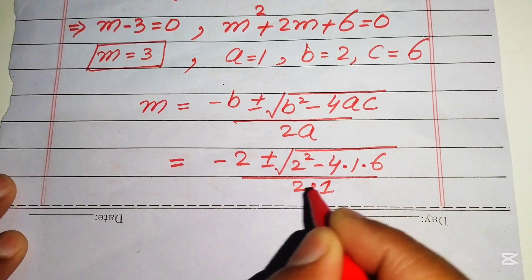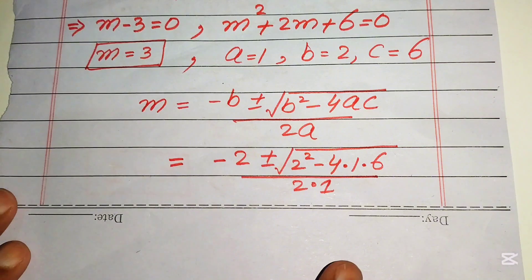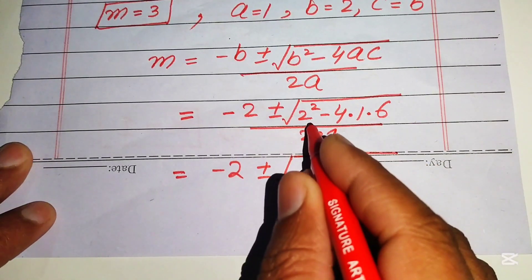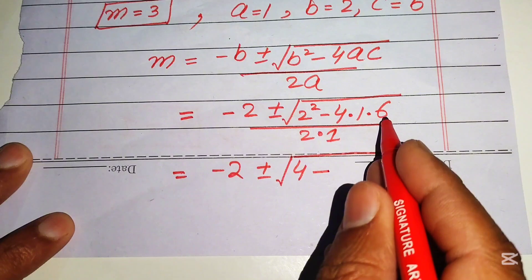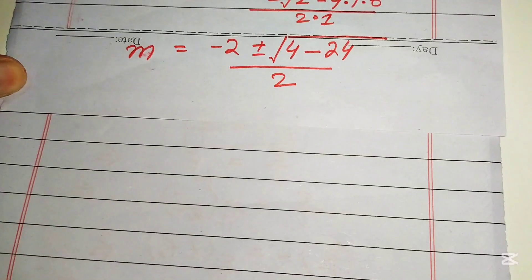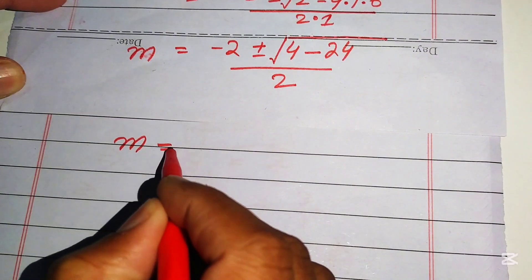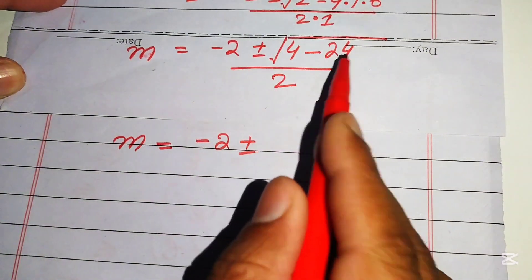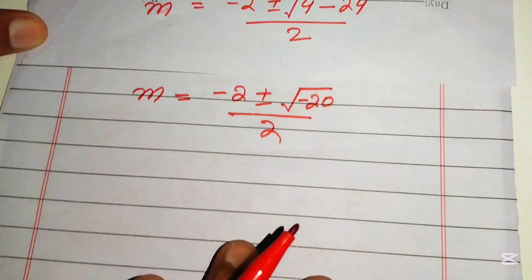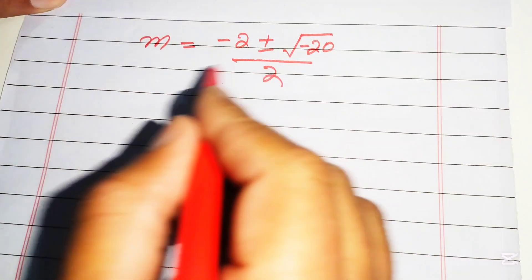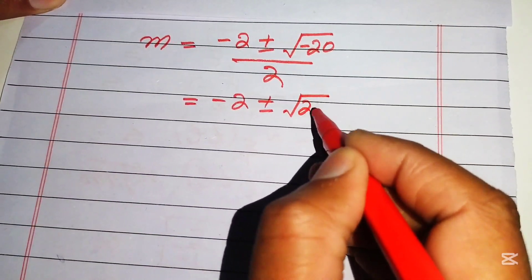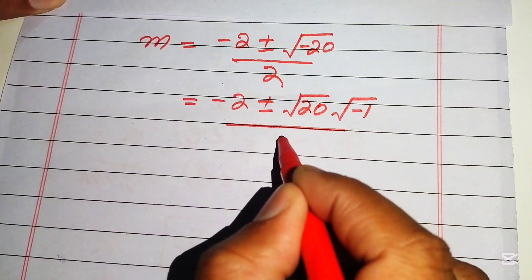Simplifying: m equals minus 2 plus or minus the square root of 4 minus 24, divided by 2. That gives minus 2 plus or minus the square root of negative 20, divided by 2. We separate the square root of 20 and the negative sign: square root of 20 times square root of minus 1, divided by 2.